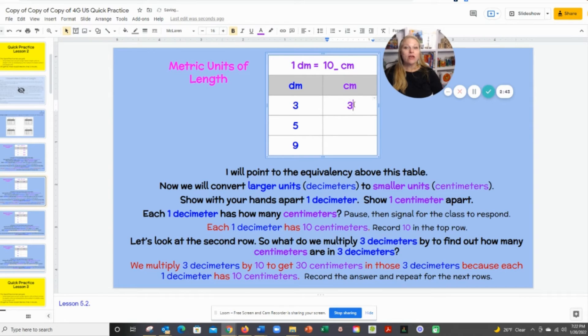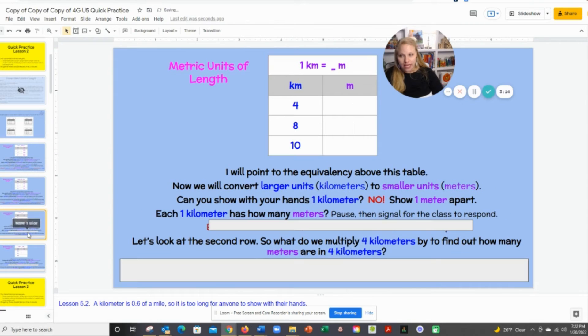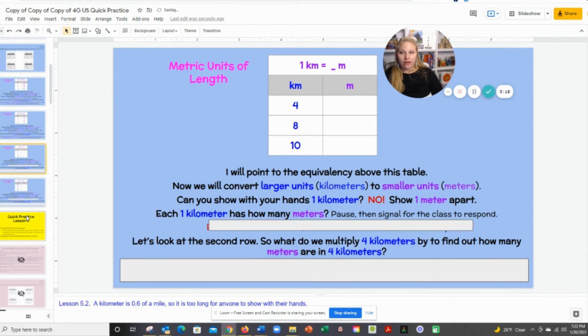Class, 3 times 10, 30. 5 times 10, 50. 9 times 10, 90. Boys and girls, when we went from decimeters to centimeters, we got more centimeters because the larger the unit, the smaller the unit, the more we need. That's the idea of the compensatory principle, understanding that even though decimeters are larger, we need more centimeters because they're smaller. It would take more of them to fill up that same amount of space.